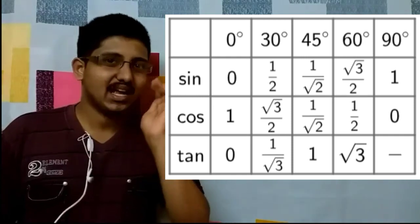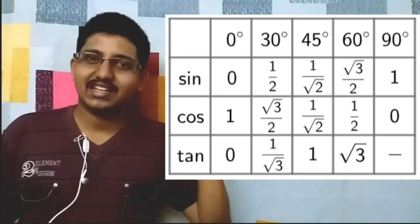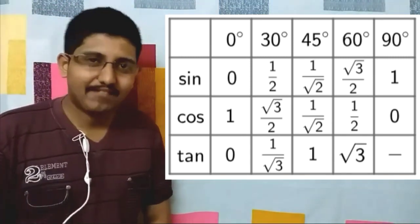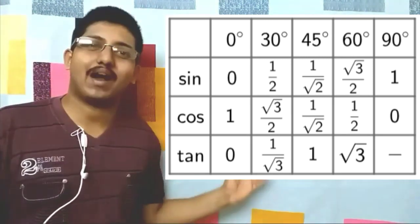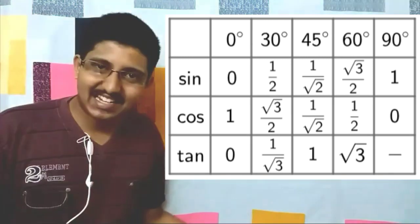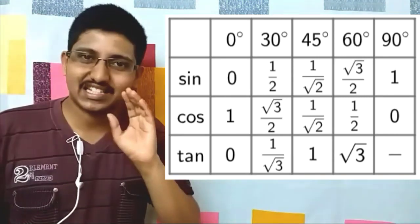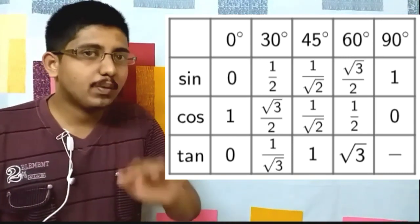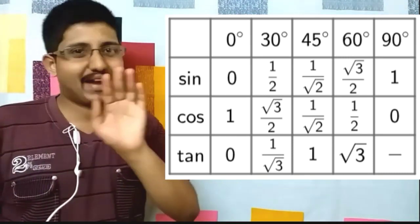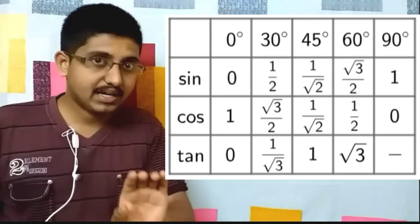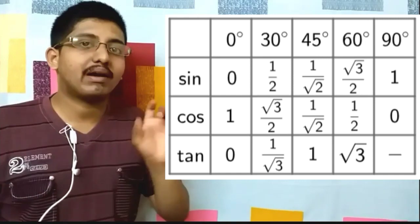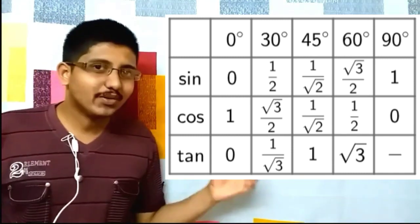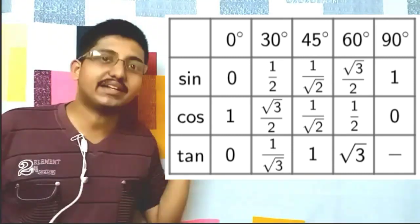First, let's revise the basic sine, cosine, and tan values of the standard angles. Here is a table which I hope everyone knows. Sine 0° = 0, sine 30° = 1/2, sine 45° = 1/√2, sine 60° = √3/2, and sine 90° = 1. Similarly for cos values and tan values. The lowest sine value is 0 and the highest is 1. For tan, tan 0° = 0 but tan 90° is undefined — essentially infinity.